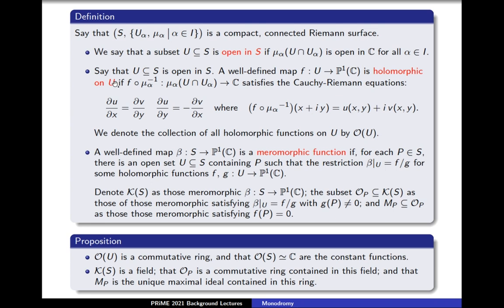Recall the following definitions. Suppose S, with the set U_alpha for alpha in I, is a compact connected Riemann surface. We say that a subset U in S is open in S if U_alpha intersected with U_alpha is open in C for all alpha in I. We say that, assuming U in S is open in S, a well-defined map F from U to P1(C) is called holomorphic on U if F composed with mu_alpha inverse, from mu_alpha of U intersected with U_alpha to C, satisfies the Cauchy-Riemann equations.